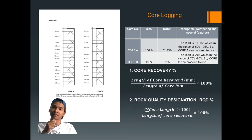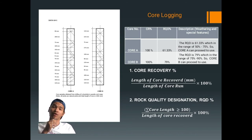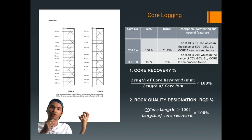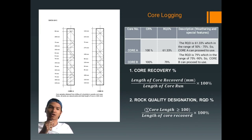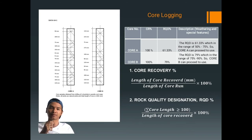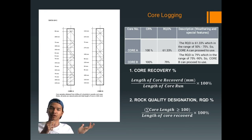Hi, my name is Muhammad Nazmi Ashraf bin Ahmad Nizam. For this section, I am going to discuss the lab exercise for core logging. As you can see from the results, we obtained data for two types of cores — Core A and Core B. We need to find the core recovery and core recovery percent. Core recovery percent is calculated by summing the length of the core pieces and dividing by the total length of core, then multiplying by 100%. For Core A, we get 100%, and for Core B, also 100%.